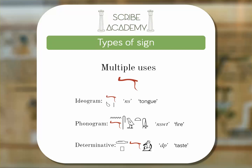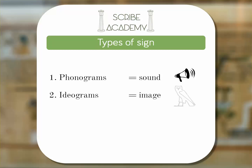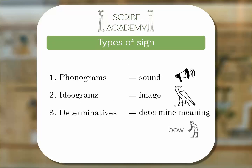A lot of it is just getting the hang of it — the more you practice, the more you get used to telling the difference. You already do this with English; you just know the difference between taking a bow and tying a bow. So to recap, there are three types of hieroglyphic signs: phonograms, which are sound signs; ideograms, which are images of the word; and determinatives, which help determine the meaning of the word.